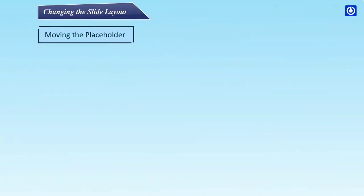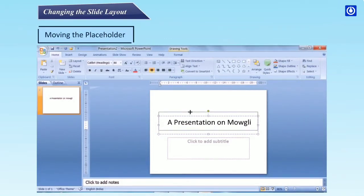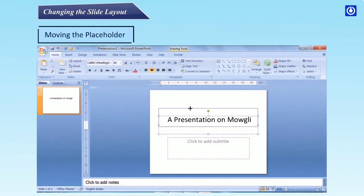Moving the placeholder: step one, click on the placeholder — a border will appear; step two, position the pointer on the border; when it changes, drag the mouse to move the placeholder; step three, release the mouse button as the placeholder moves to a new position.